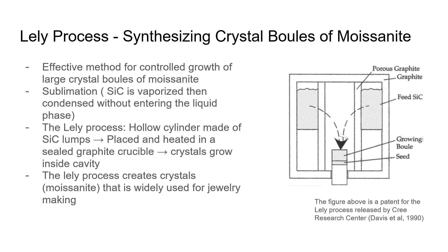Another very common process for synthesizing silicon carbide is the Lely process. The Lely process is generally used in jewelry making applications as it results in crystal boules of moissanite. The Lely process begins with a hollow cylinder made of silicon carbide lumps placed, heated, and sealed inside a graphite crucible. From here, crystals grow inside the cavity.